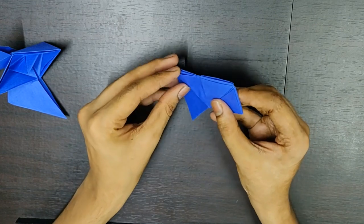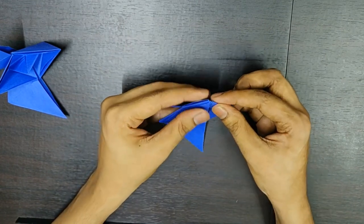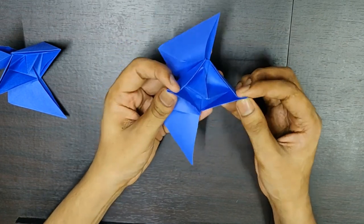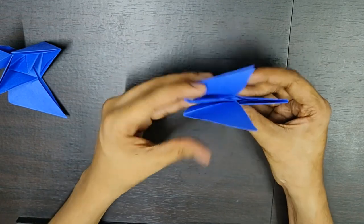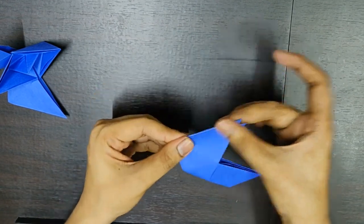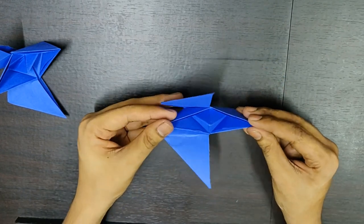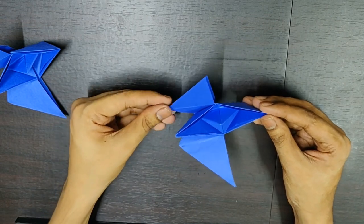Now, the final step. All you need to do is hold like this on both sides and open this up. And give it a proper shape so that it opens properly. And then, press it gently. That's all. This is the final aeroplane boat which we were about to make.